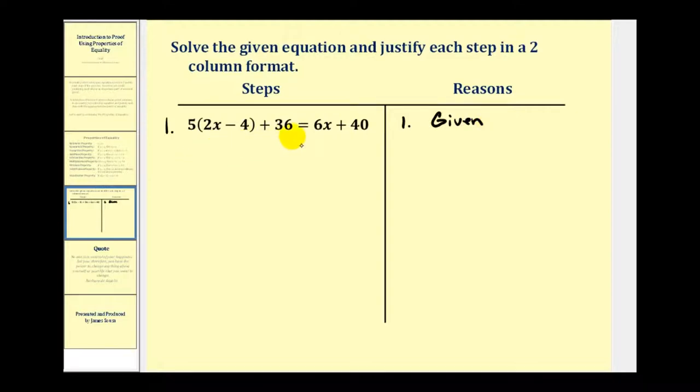Now if we were going to solve this equation, the next step would be to distribute the five. So let's go ahead and do that, and then we'll write the justification or reason on the right. So if we distribute, we would have 10x minus 20 plus 36 equals 6x plus 40.